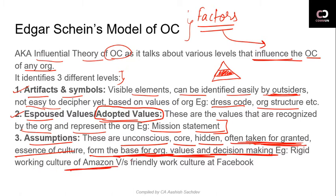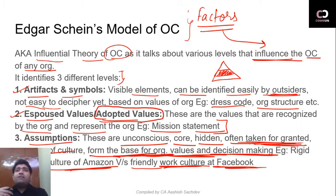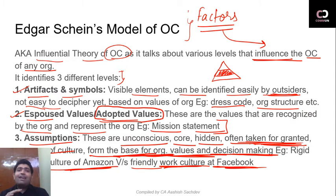For example, we have the rigid working culture of Amazon versus the friendly work culture at Facebook. At Amazon, the work culture is very difficult — there are many restrictions, many compliances, and different protocols at every level that you must follow. At Facebook, things are a bit different — there is a friendlier work culture, more leaves are given, and employees get many more benefits. Now where did this work culture come from? It came from the core values of whoever started that company.